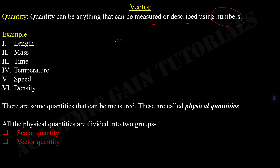Let us take an example. This is a matter and we have to know the mass of this matter. We put this matter on a weight machine and the weight machine gives us a number that is 5 kg. As we can measure the mass of this matter and describe it in numbers, mass is a quantity.